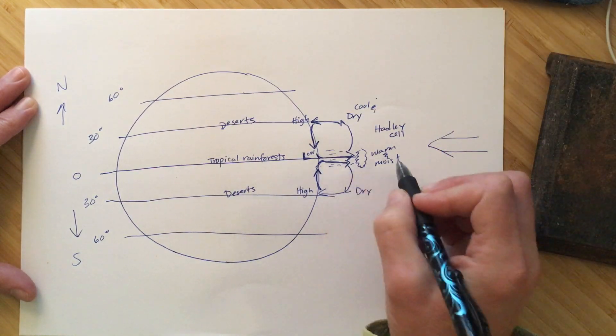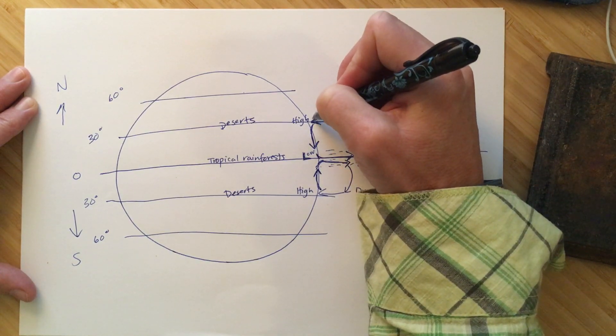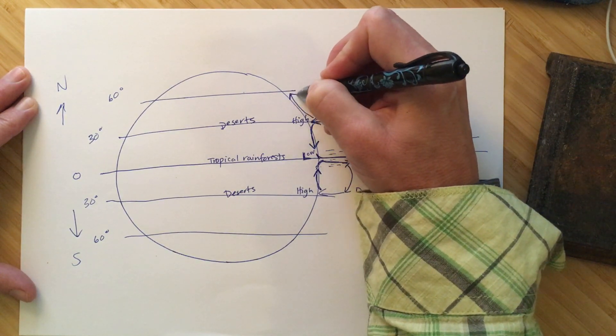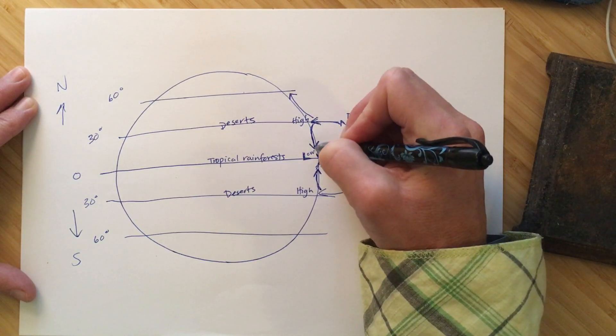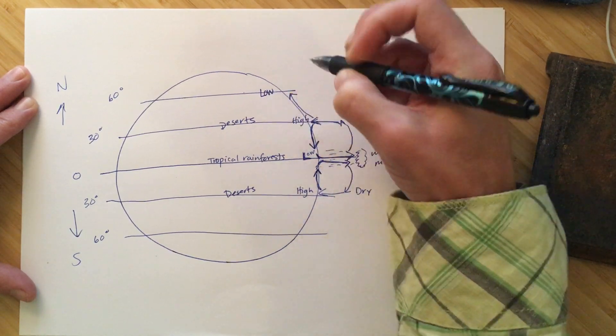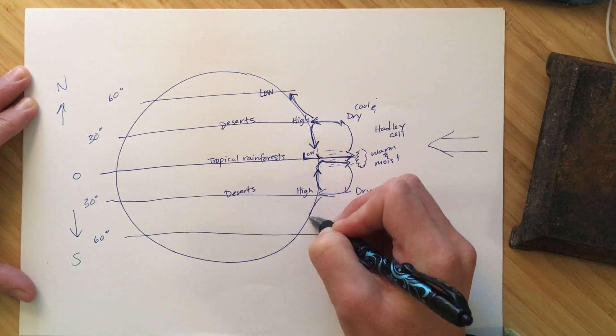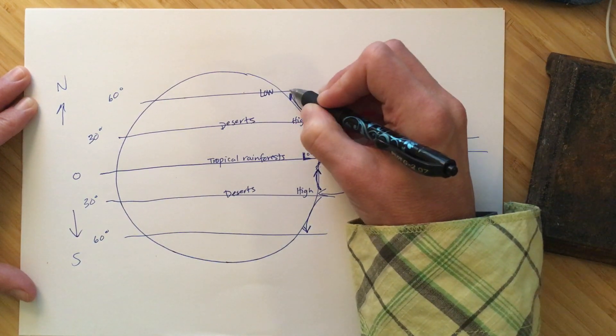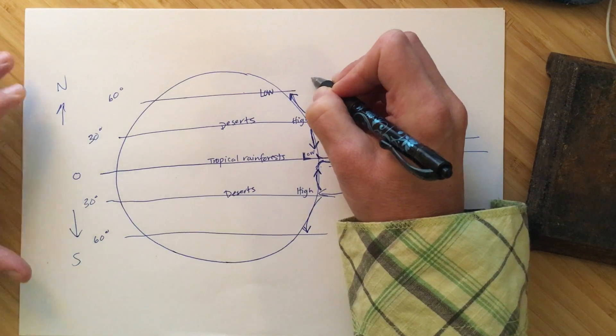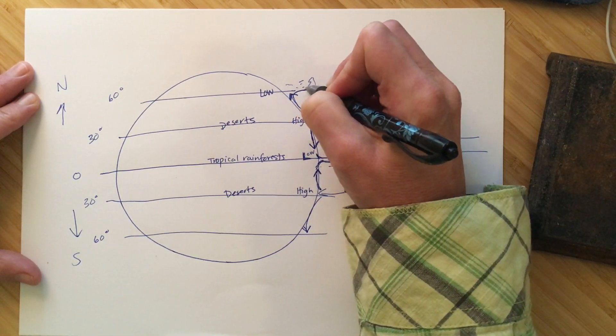And the Ferrel cell is going to be kind of similar to the Hadley cell in the fact that we're going to go from the high to low. And in fact, that air coming down at 30 degrees can go towards the equator, but there's also a low pressure system at 60 degrees, and so it's going to travel that way as well.